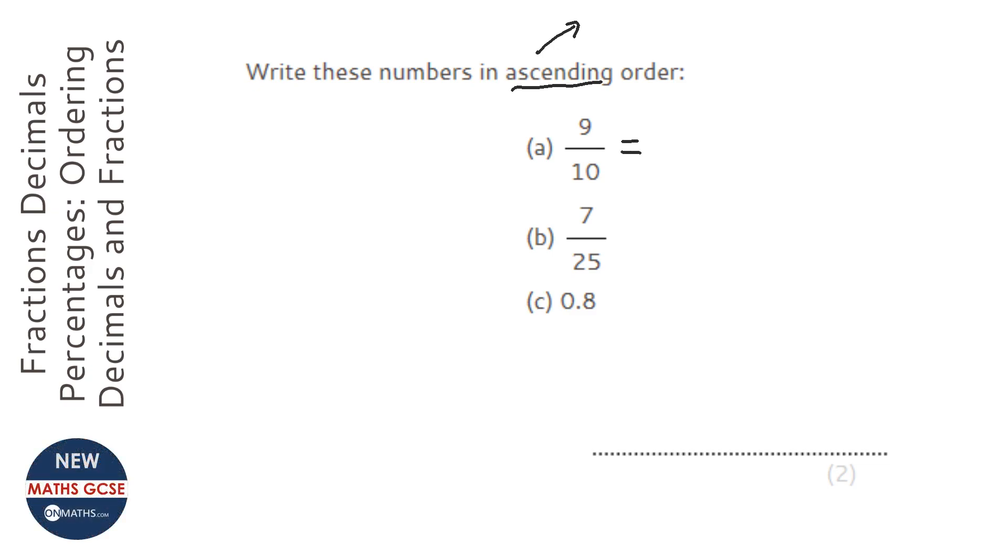Now, I know that using my columns, this is my units, this is my tenths, 9 tenths would be 9 here. So, point there, so it's going to be 0.9 is 9 tenths, because that 9 is in the tenths column.